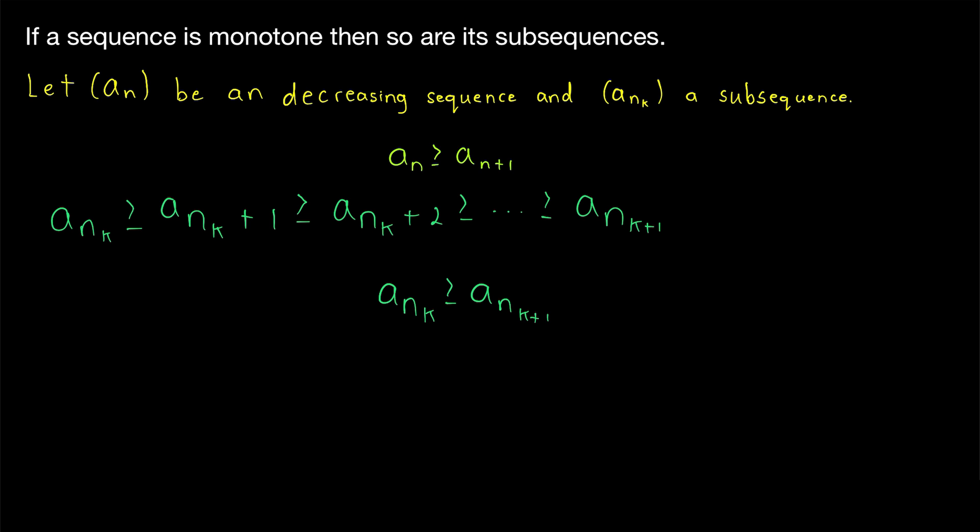The last two things I want to point out are that we could state this as a biconditional statement. So, we could say that a sequence is monotone if and only if all of its subsequences are. We just proved that if a sequence is monotone, then its subsequences are. But the converse is obviously true because a sequence is a subsequence of itself. So, if all of its subsequences are monotone, well, that means it's monotone.